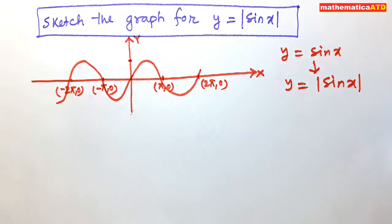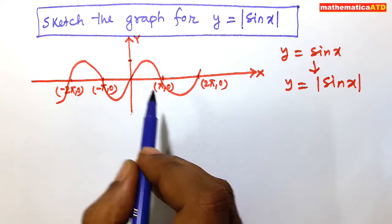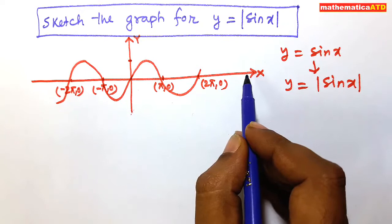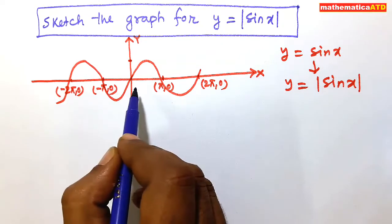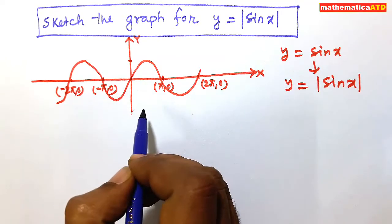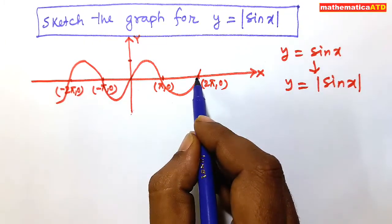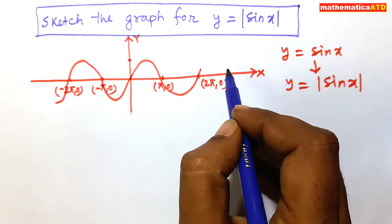So we have to now draw the curve y is equal to modulus of sin x. To draw it, we take the mirror image in the x-axis of the portion of the graph of sin x which lies below the x-axis. You can see that in the curve, this part and this part are negative, while these parts are positive. So the positive parts will be as usual.